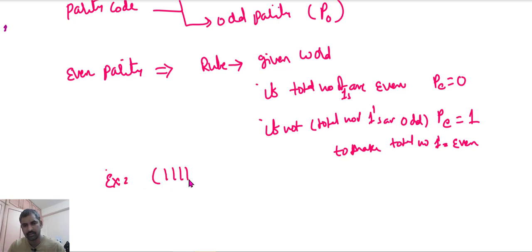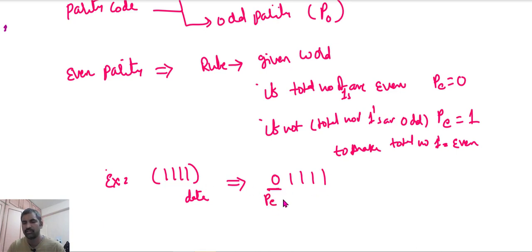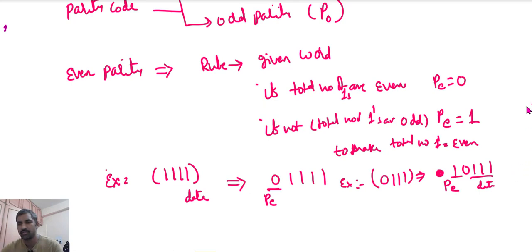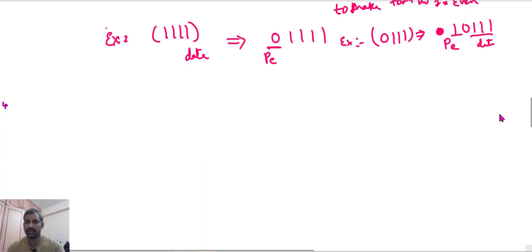For example, take the data 1 1 1 1. It already has an even number of ones, so the parity bit becomes 0 and you send 0 1 1 1 1. Take another example: 0 1 1 1 — this has an odd number of ones, so you add parity bit 1, giving 1 0 1 1 1. This is your even parity bit followed by your data bits. The total number of ones is now even.